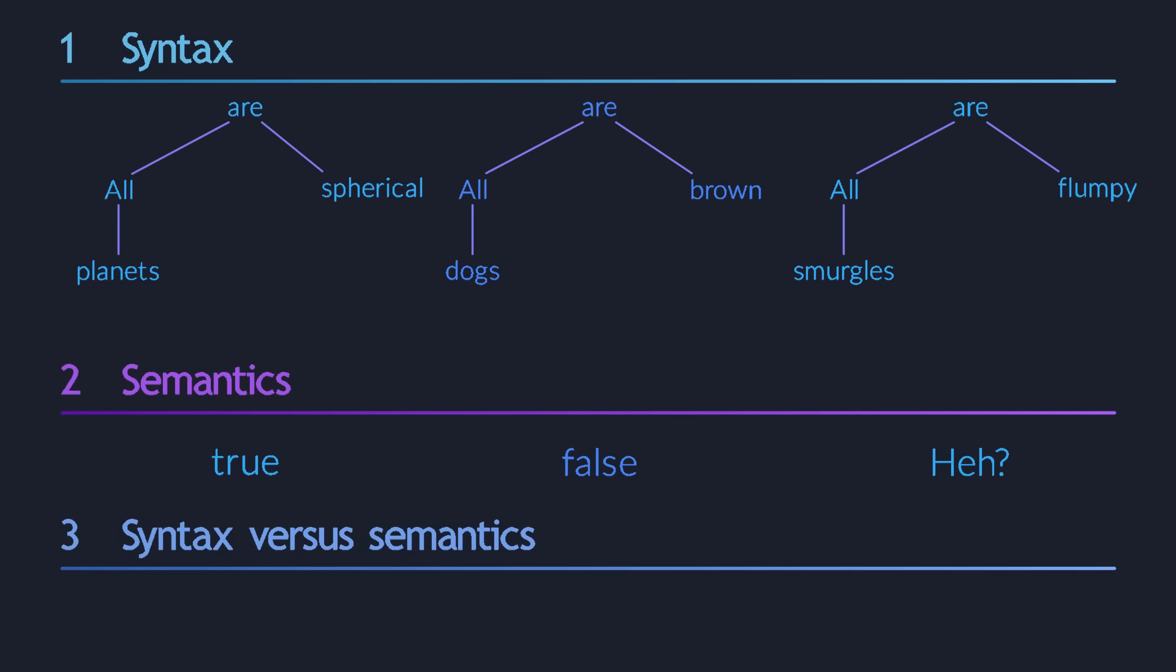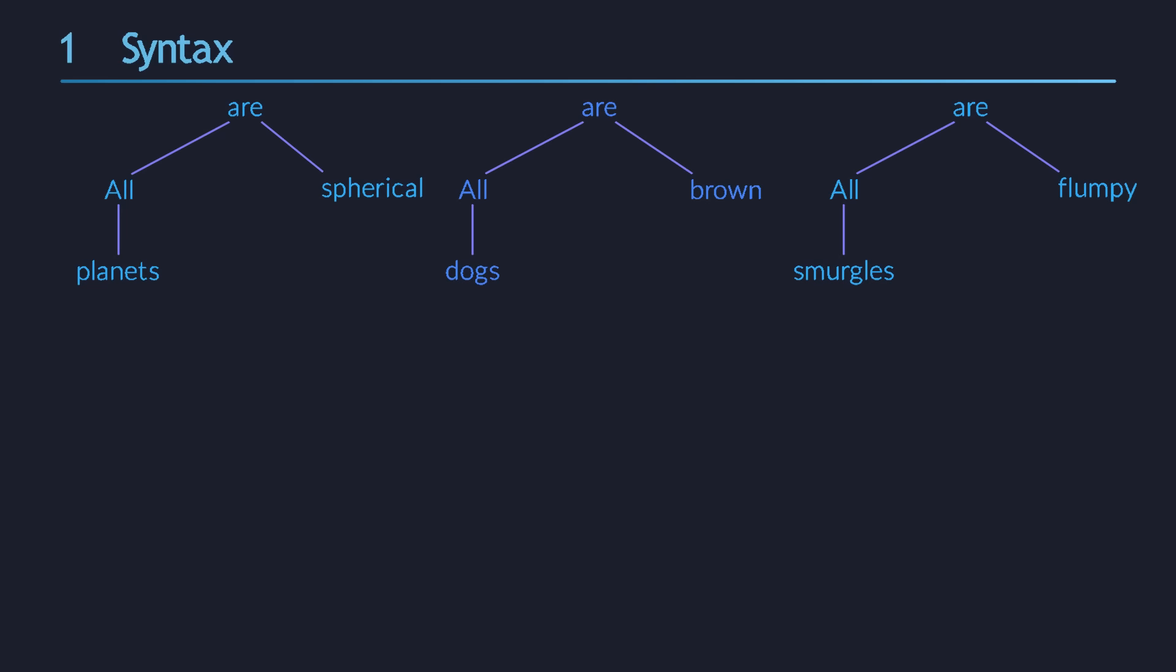In a human language like English, the structure of sentences is dictated by the grammar of the language, also known as the syntax. Mathematical logic is a more formal kind of language, but it also has a syntax, which tells you what kinds of structures are allowed for logical sentences and expressions.